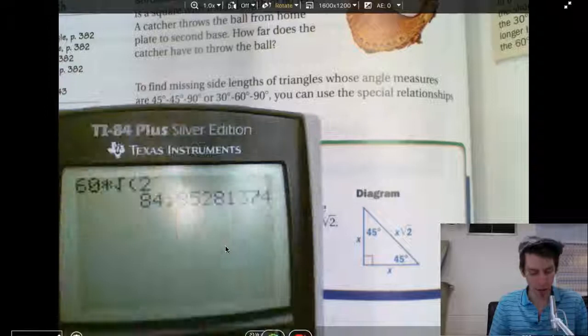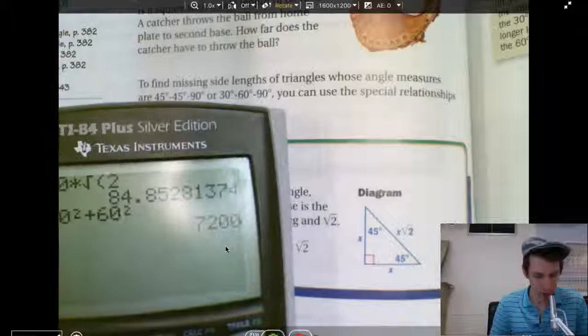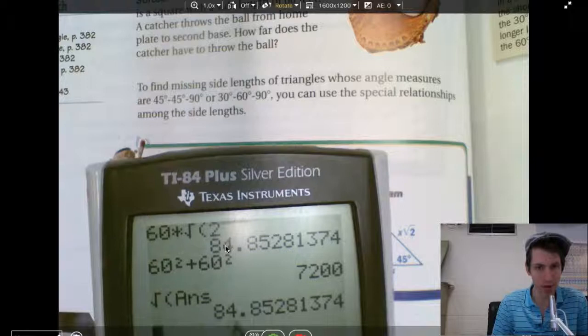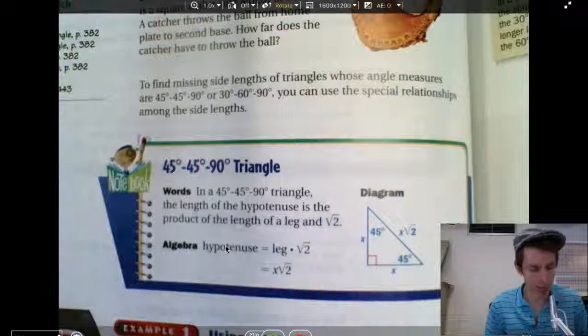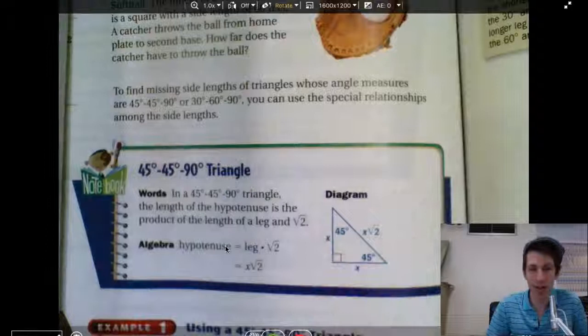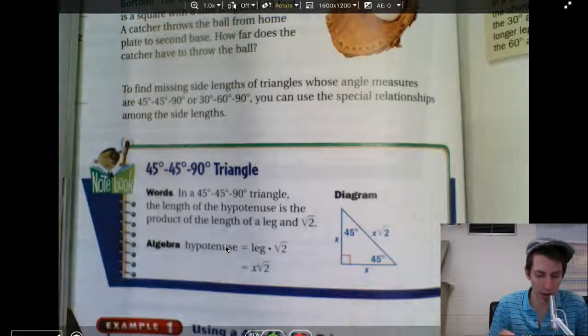84.8528. Now, if I wanted to do the Pythagorean theorem, just go 60 squared, plus 60 squared, and then do the square root of that, it should give us the same exact thing, and it did. 84.85, 84.85. See that? So, which way is easier? Well, if you're comfortable with the Pythagorean theorem, then go for it. But, if you get used to this method, it's a lot quicker. 45-45-90 triangle. You can find the hypotenuse just by multiplying by the square root of 2.